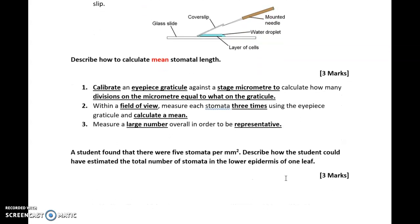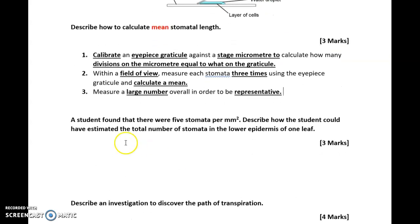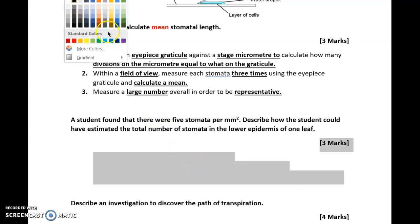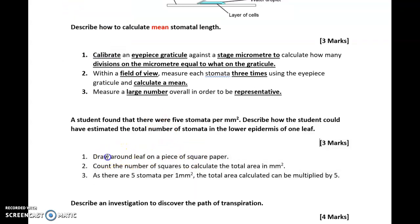Another question: a student found that there were five stomata per millimeter squared. Describe how the student could have estimated the total number of stomata in the lower epidermis of one leaf. This is quite an interesting question, and it's quite a simple answer. All you've got to do is, in order to find out how many stomata there are, first draw around the leaf on a square piece of paper. Once you've done that, you can count the number of squares because you need to get the total area per millimeter squared. Remember, it says a student found that there were five stomata per millimeter squared, so you've got to get the area of that leaf that you have. The only way to get that is by drawing around a square piece of paper.